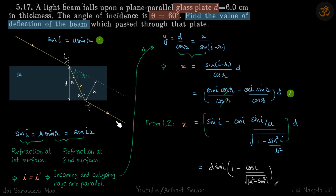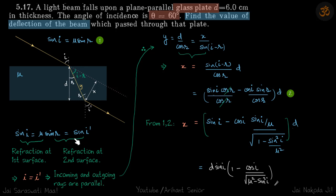Let's first derive why the incoming and outgoing rays are parallel. At the first surface, refraction occurs — by Snell's law: sine i equals mu sine r. Because the two surfaces of the slab are parallel, the angle of incidence at the second surface is also r. Applying Snell's law again: mu sine r equals sine i dash. From this we can see i equals i dash.